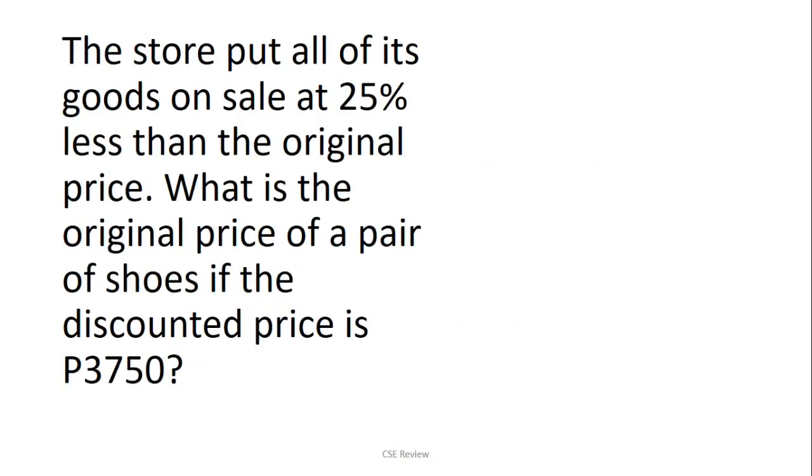Now, the next type of question, I'm going to demonstrate muna. Or if you want to try it out for yourself, you can also hit pause. Sabi the store put all of its goods on sale at 75% less than the original price. Hinahanap yung original price ng pair of shoes if the discounted price is 3,750. So again, if you want to use the traditional method, that's okay. But if you want to use the new method, new price over original price, you have the peso side and the percentage side.